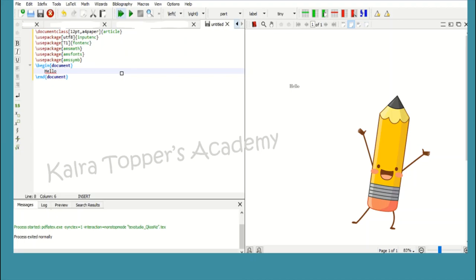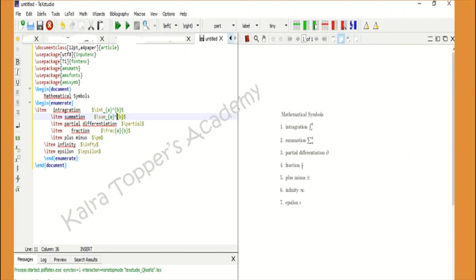You can see on the other side of the screen that hello will be automatically typed on your window as the PDF is being generated. So whatever you write inside this begin document and end document will automatically be printed or the PDF will be generated for that. Whatever is written above the begin document is called the preamble. These are the basic commands you need to write to run any LaTeX program.